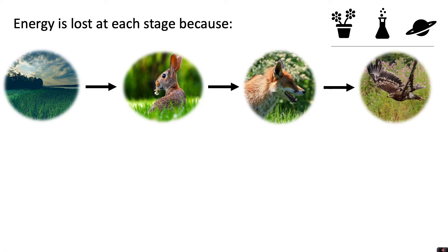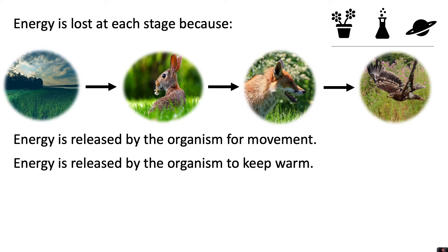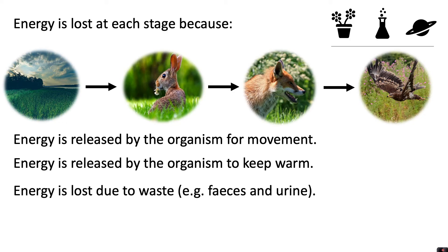Energy is lost at each stage because energy is released by the organism for movement. Energy is also released by the organism to keep warm. Energy is also lost due to waste — for example faeces and urine — and that can't then be passed up the chain.